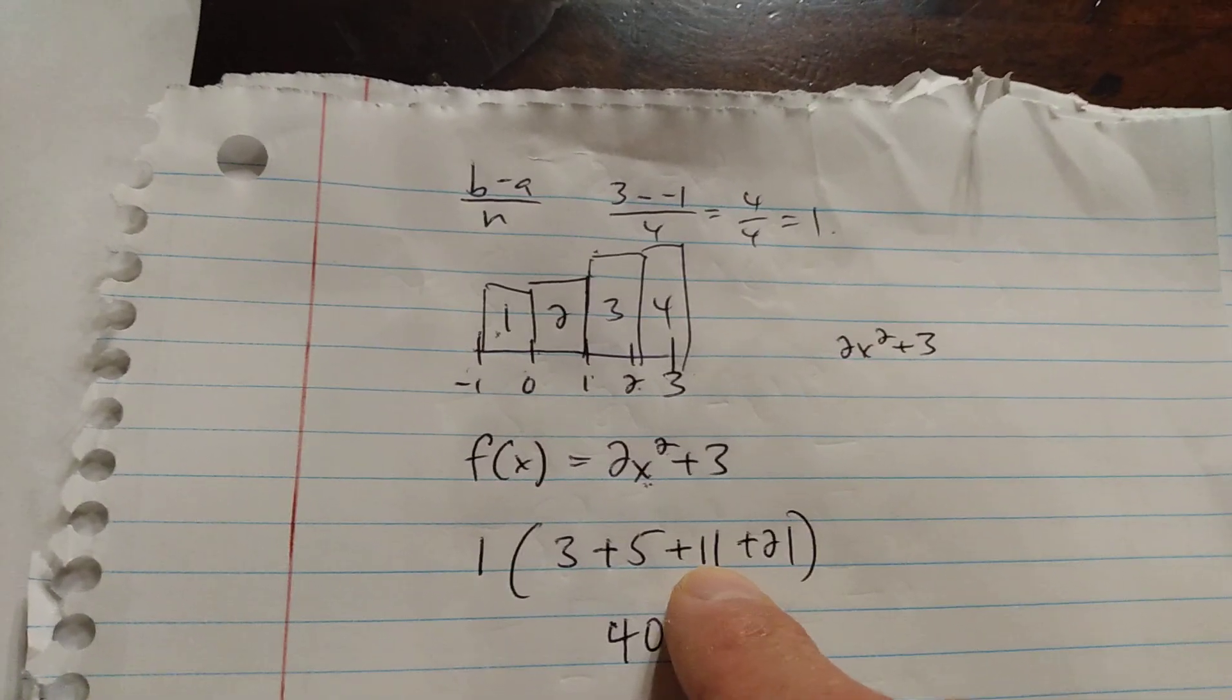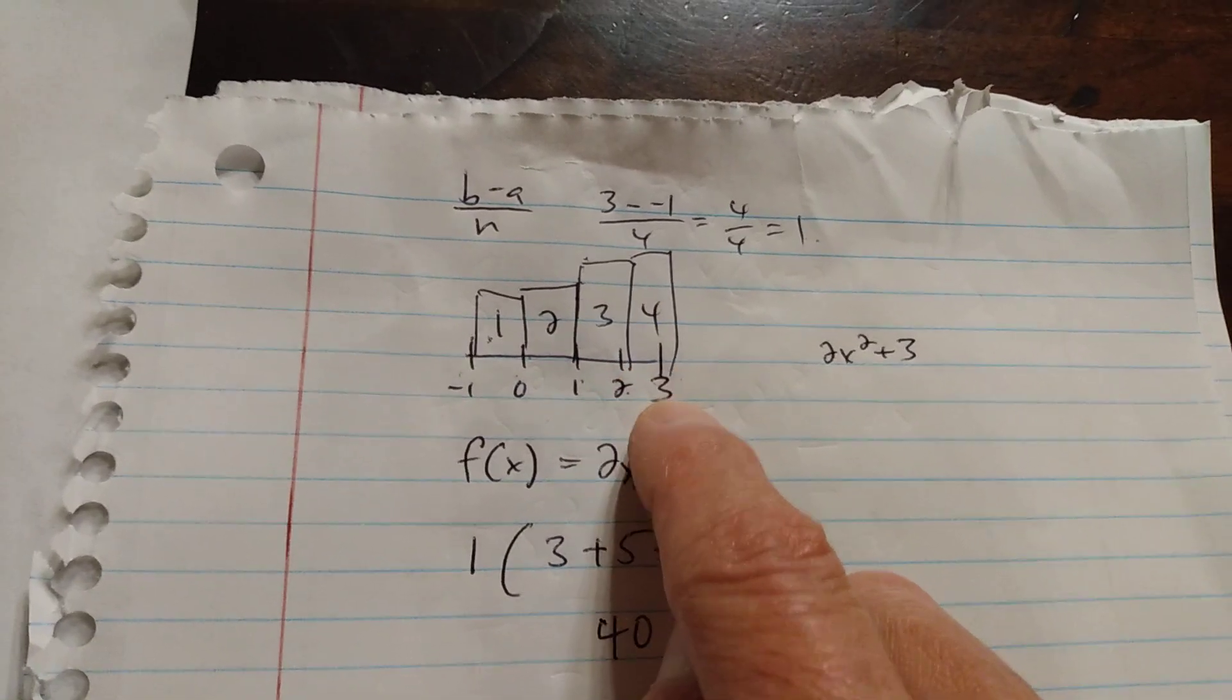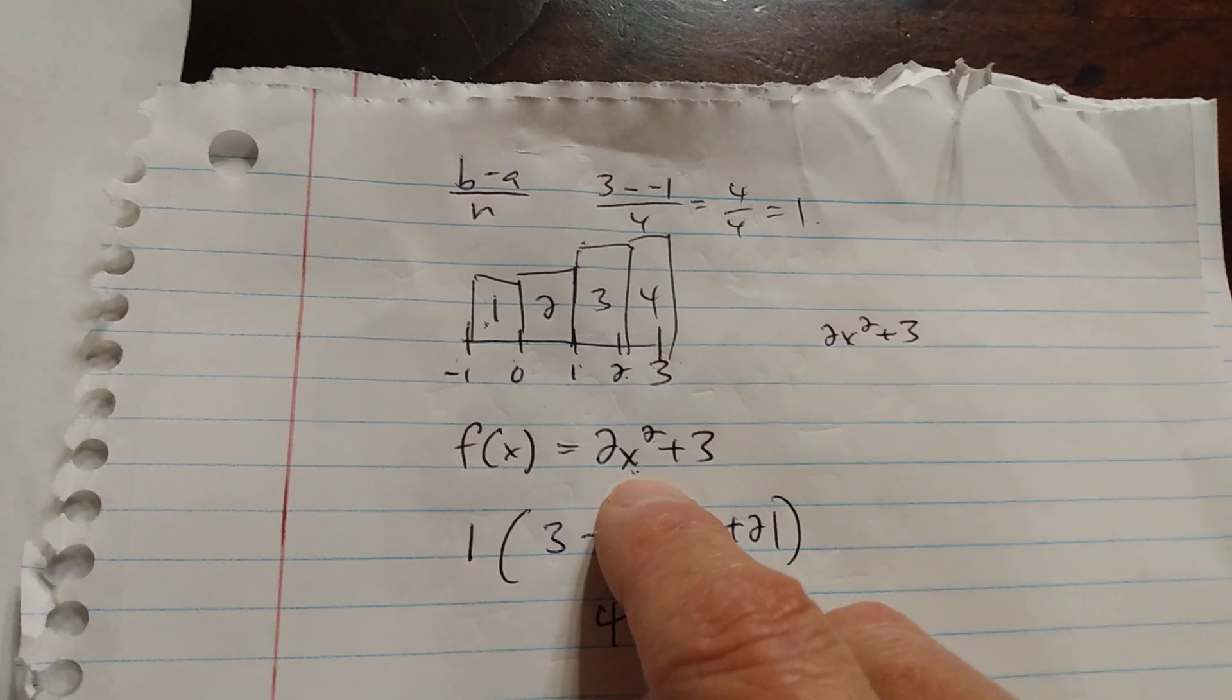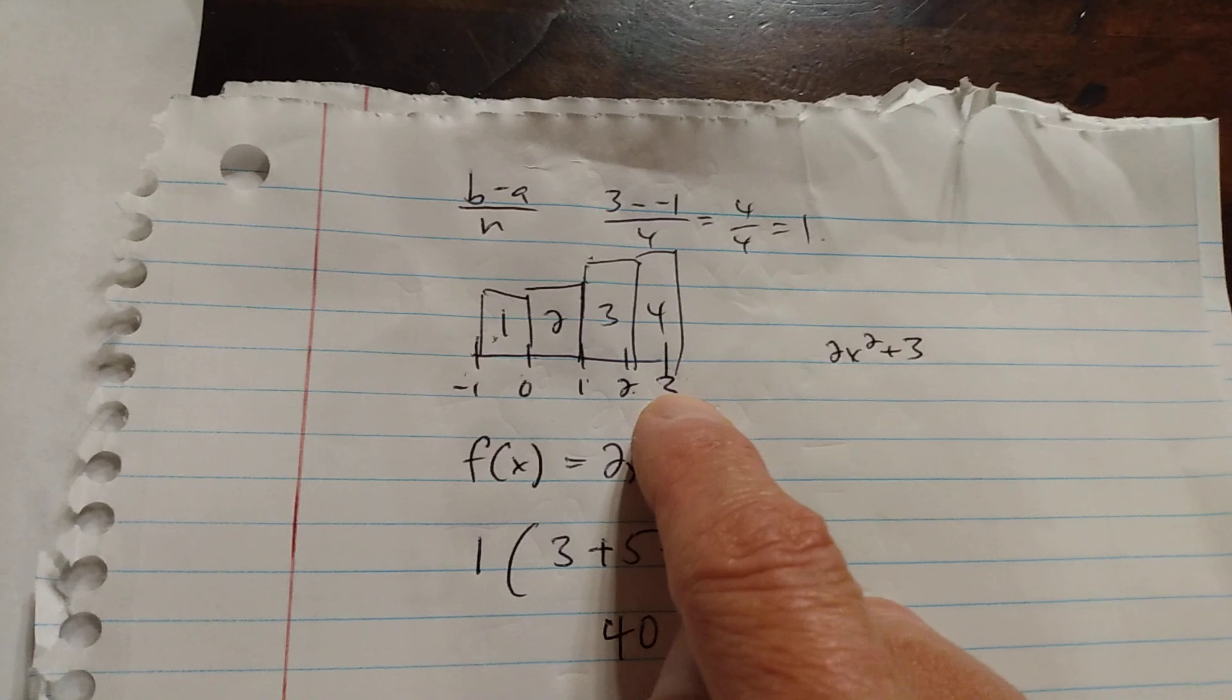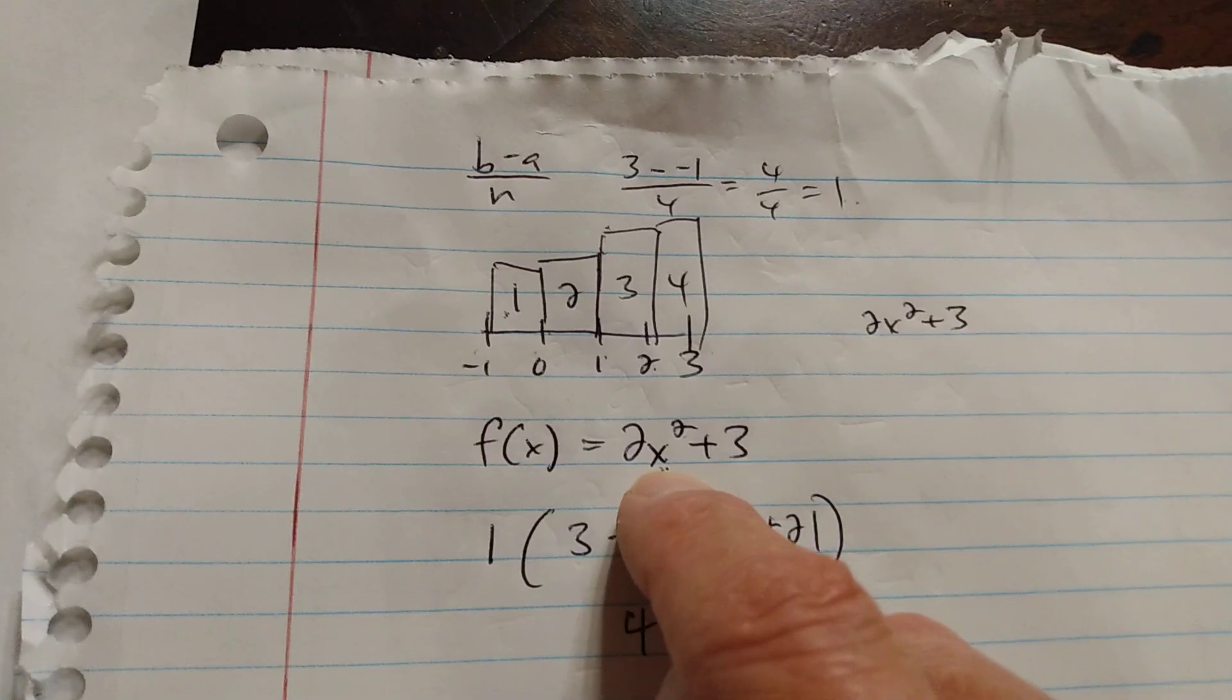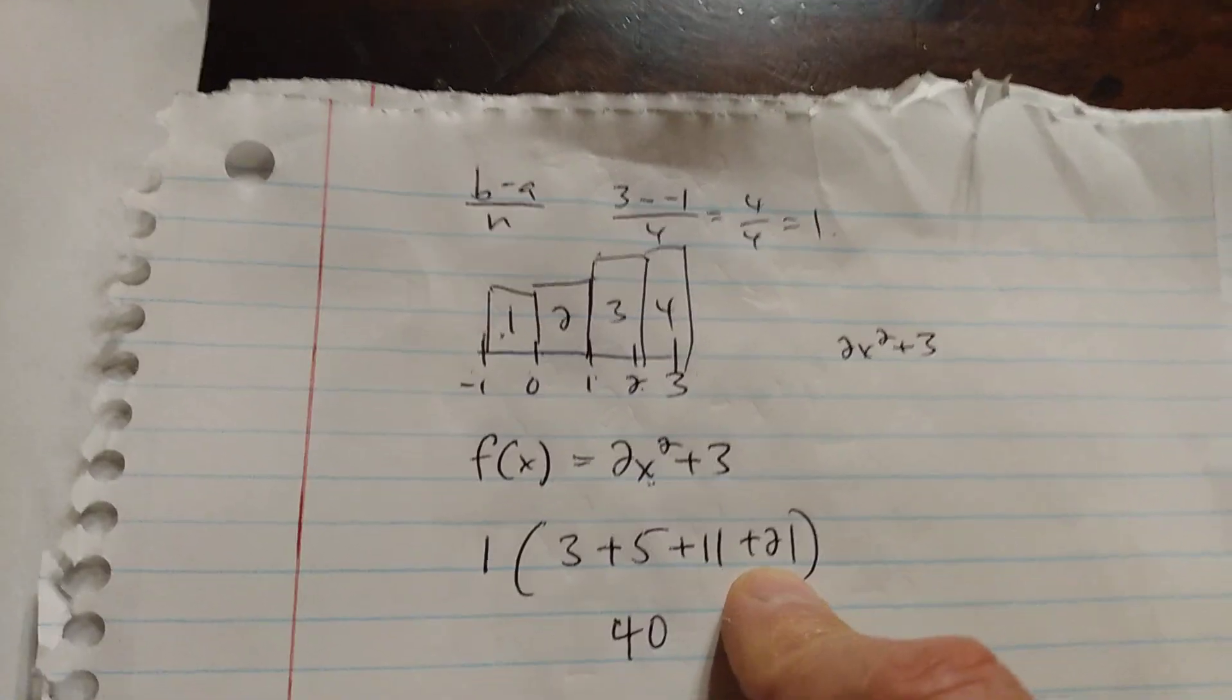And my last one, I'm subbing x into this, we're subbing 3 in for x, sorry. 3 squared is 9, times 2 is 18, plus 3 is 21.